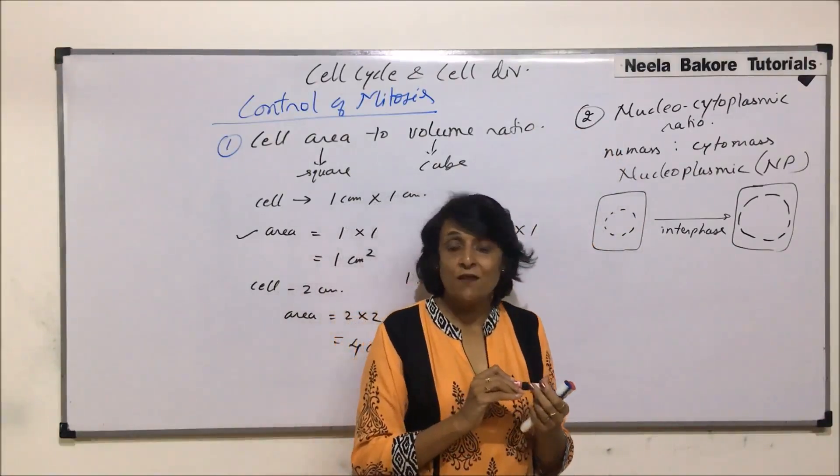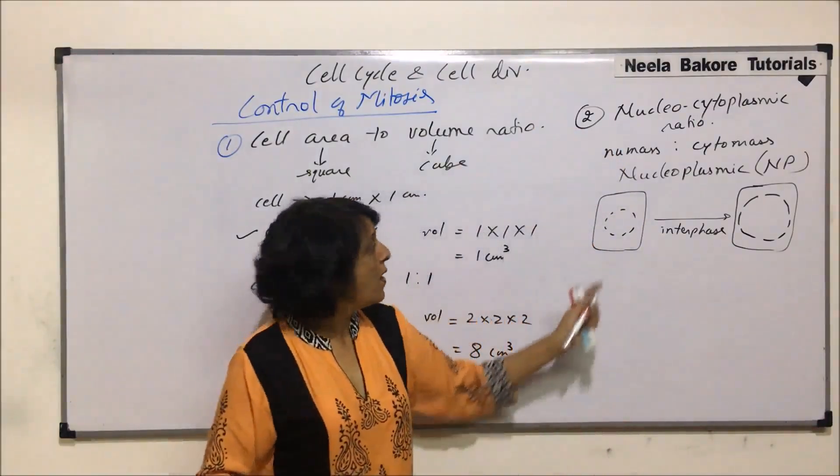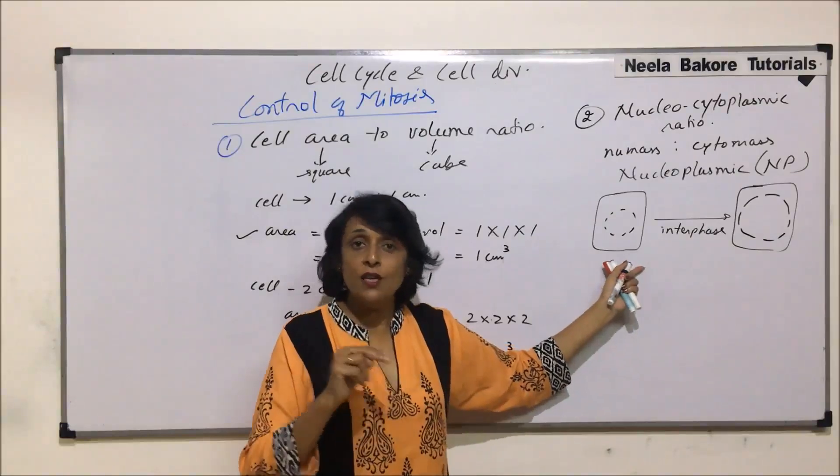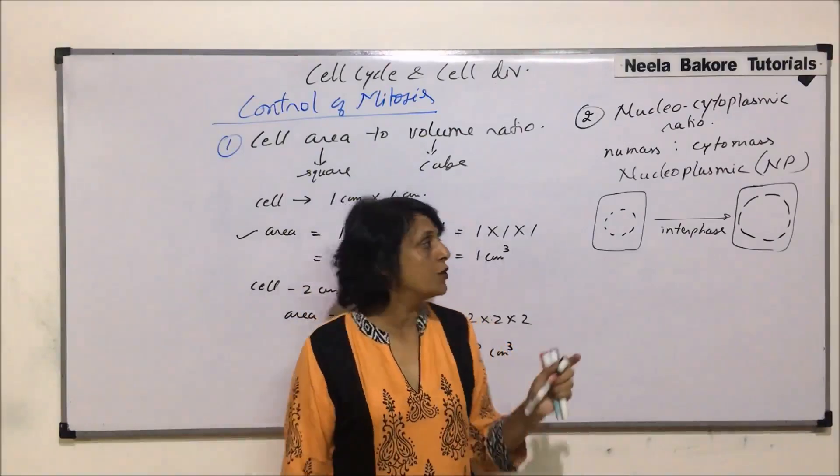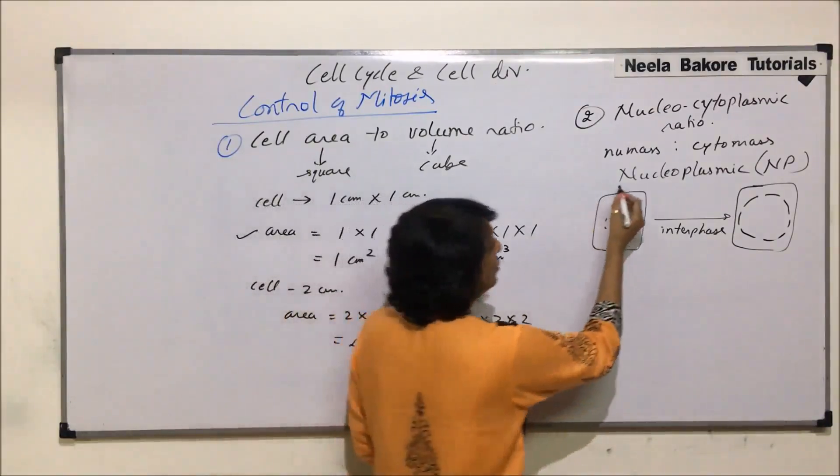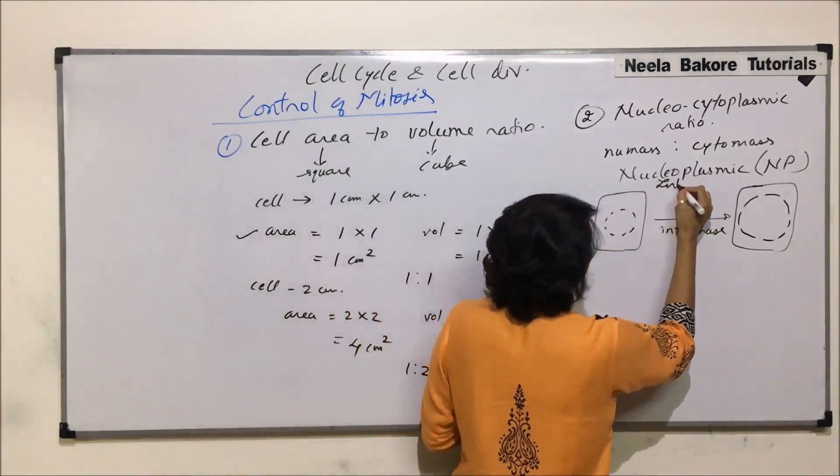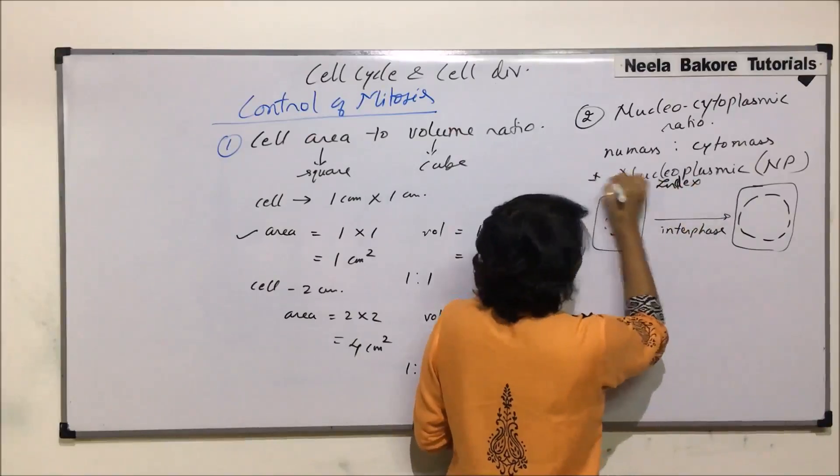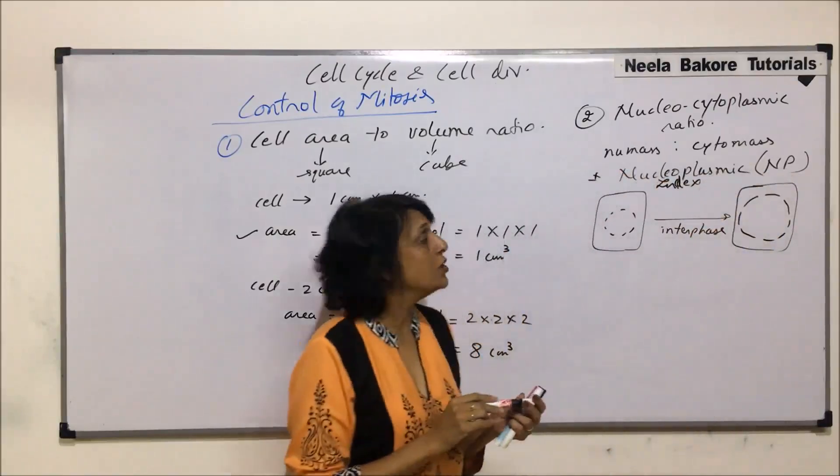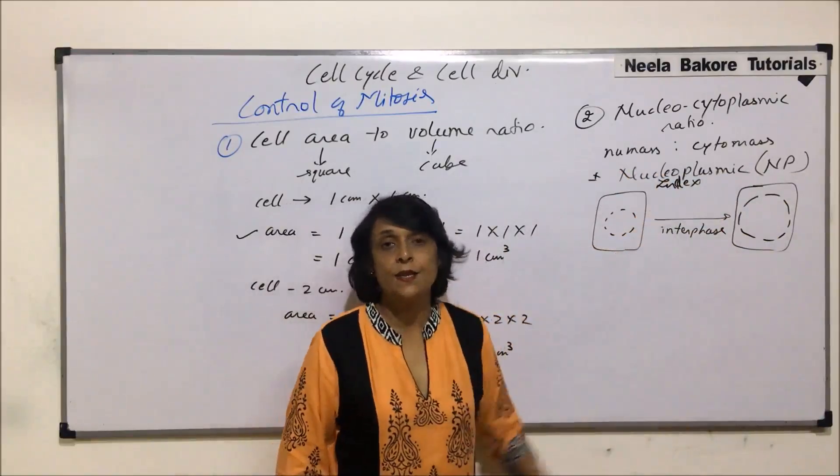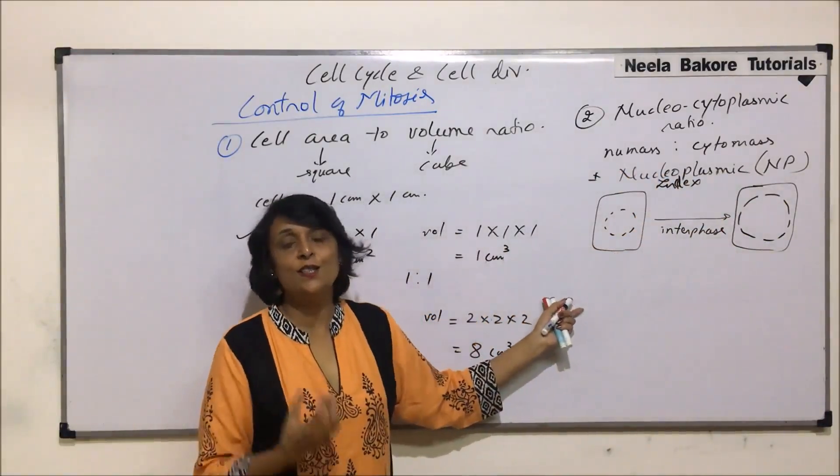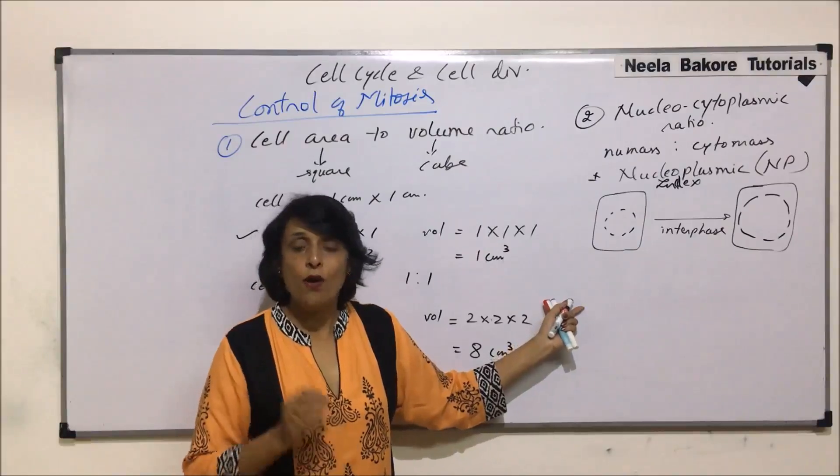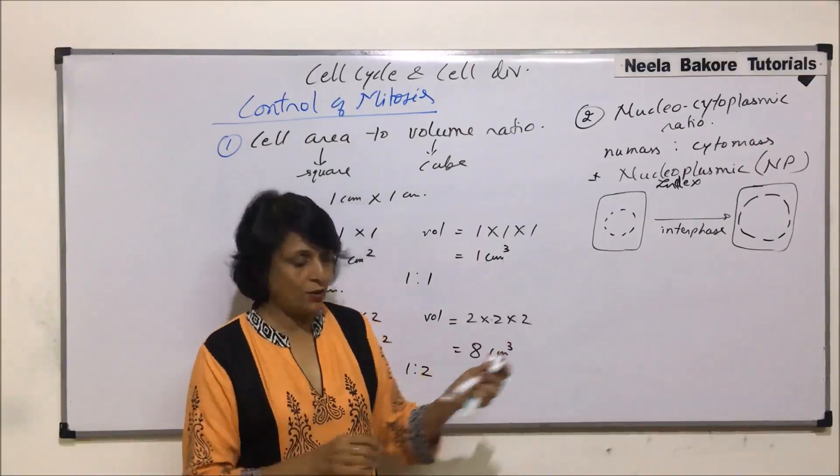So whether it is surface area to volume ratio or it is nucleus to cytoplasmic mass ratio, that is the index which we talk of. Nucleoplasmic index. And this abbreviation is for this nucleus plasmic index. So these two can be considered as the reasons for controlling the mitotic division.